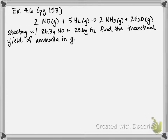Starting with 86.3 grams of NO and 25.6 grams of H2, find the theoretical yield of ammonia in grams.